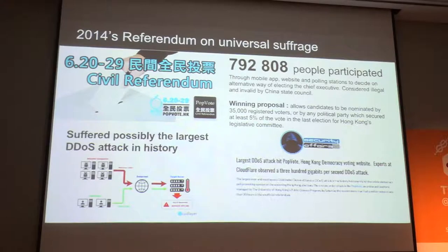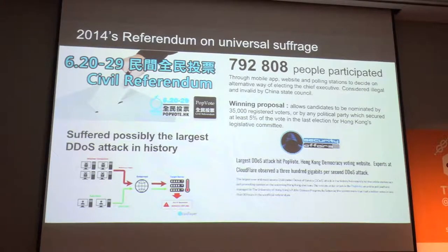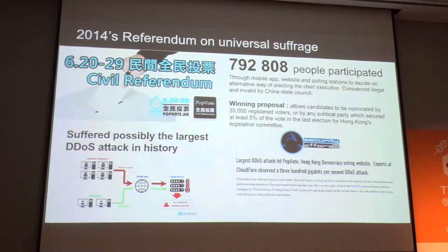This initiative was really a way to evaluate the Occupy Central movement, which occurred four months later. It was quite notable because it suffered one of the largest DDoS attacks ever known. It got a lot of coverage from the Western world too, as everything was hosted on Amazon and Cloudflare was doing the DNS. People were basically freaking out by the amount of petabytes being sent to that civil referendum initiative.